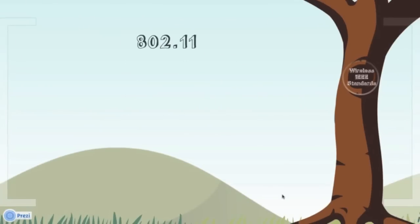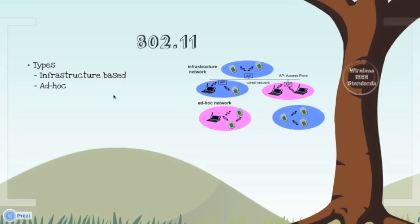802.11 architecture is of two types: infrastructure-based and ad-hoc-based. In an infrastructure-based network, transition of data is from wired to wireless using an access point. Whereas in ad-hoc, no access point is used and it is between wireless to wireless only.